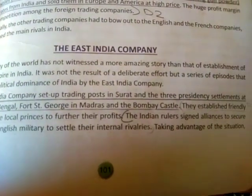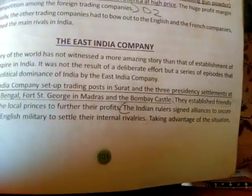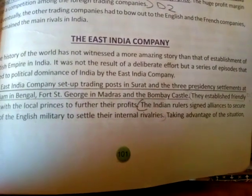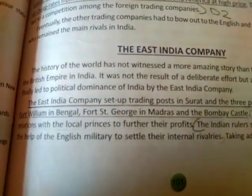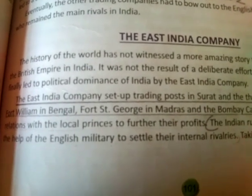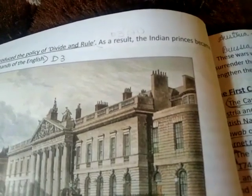Their technique was to establish friendly relations with local princes to further their profits. Indian rulers signed alliances to secure the help of British military to settle their internal rivalries — which was a mistake, as the Britishers took advantage of the situation and introduced the policy of divide and rule. They made the princes fight with each other, and as a result, the Indian princes became puppets in the hands of the English.